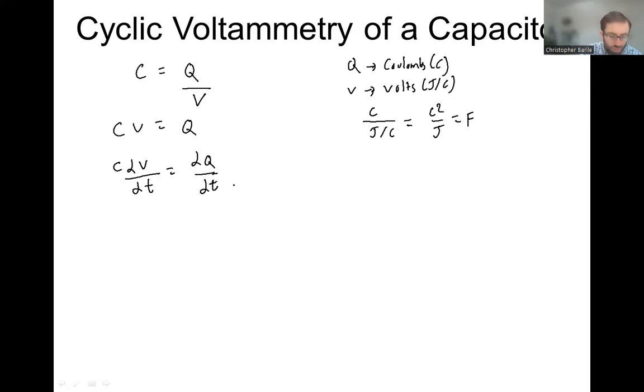What are these terms? This term is the change in charge with time. That is the same thing as current. And current has units of coulombs per second. That's an amp. So we call this current, giving it the symbol I. This is dv dt. It's how you're changing the voltage with time. That's the same as the scan rate.